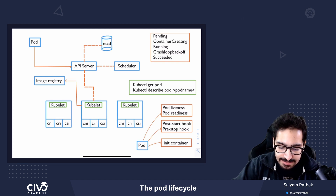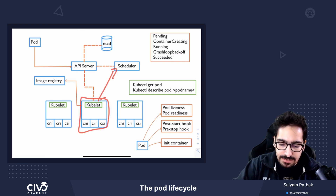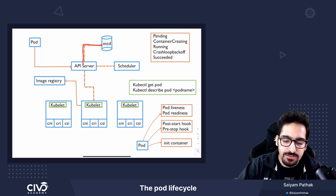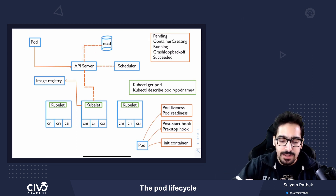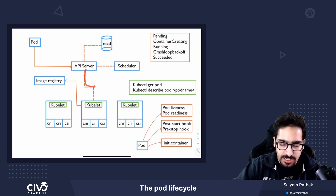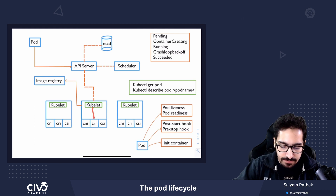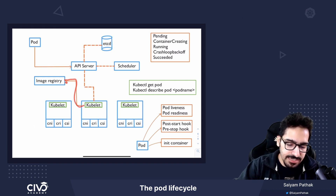Once it gets the node, it will fill the label spec node name and send that to the API server. That particular request is also stored in etcd. Now the API server instructs the kubelet that there is one pod that has to be spawned on this particular node.